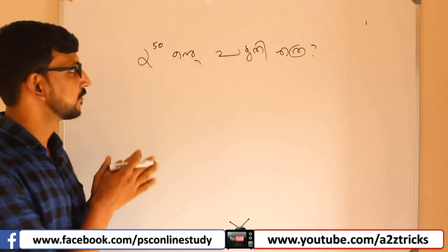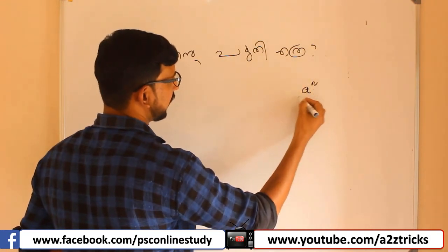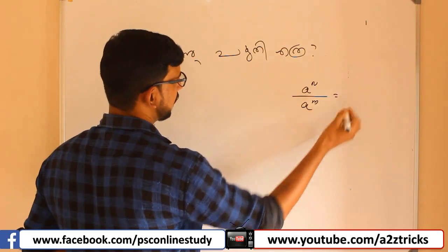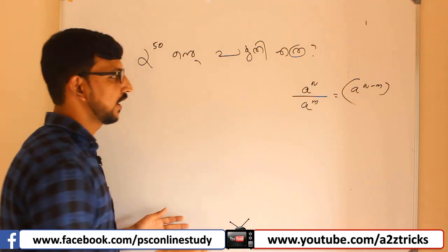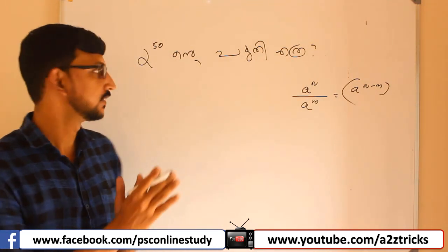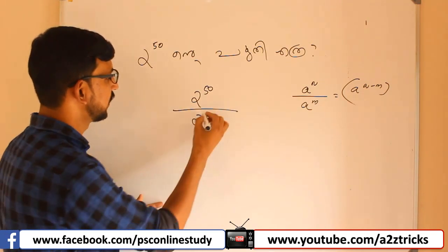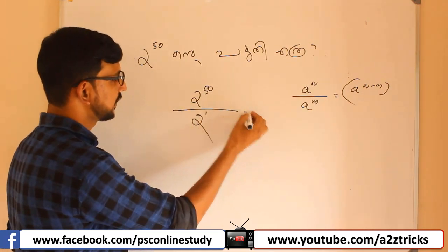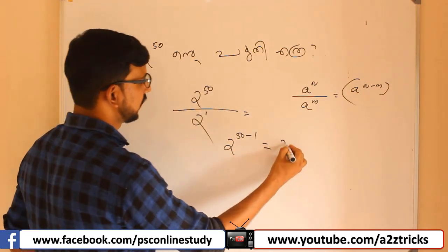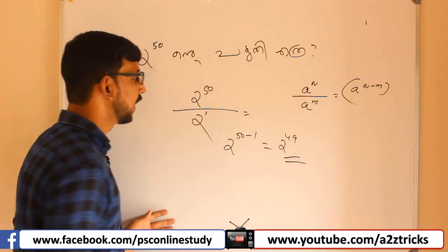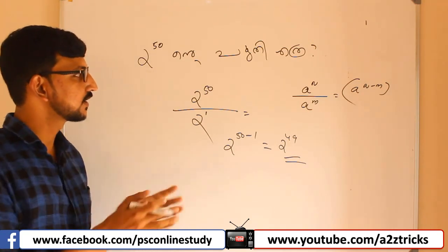Now let's do this. Here we have a name. A raise to N is A raise to M. A raise to N minus M. We have a question here. A raise to N divided by 8. A raise is A raise. The answer is A raise to N. We have a question about H: A raise to N.